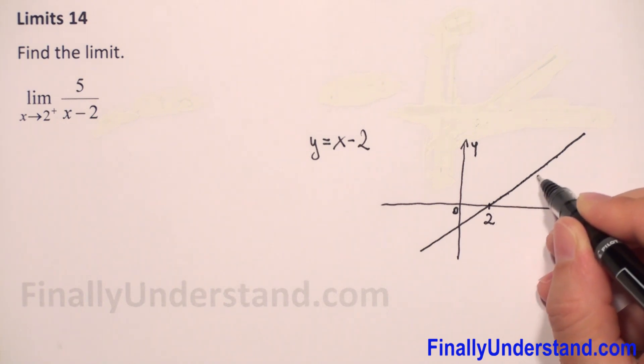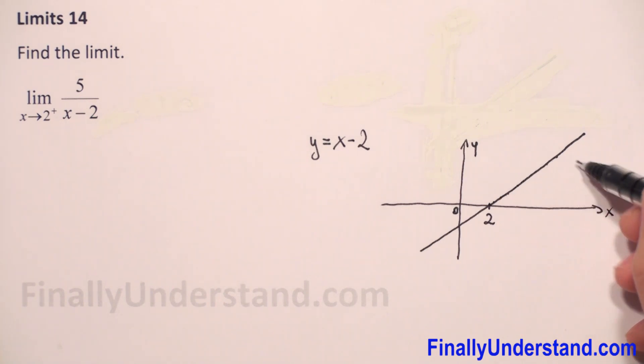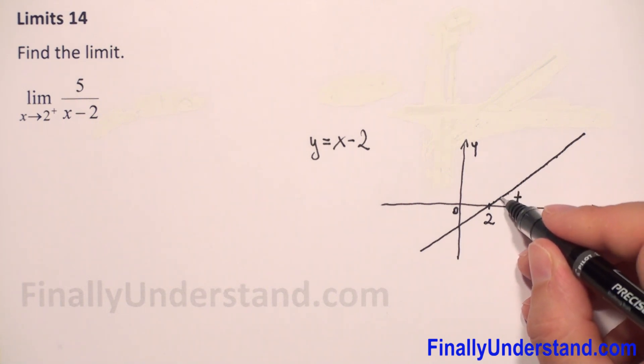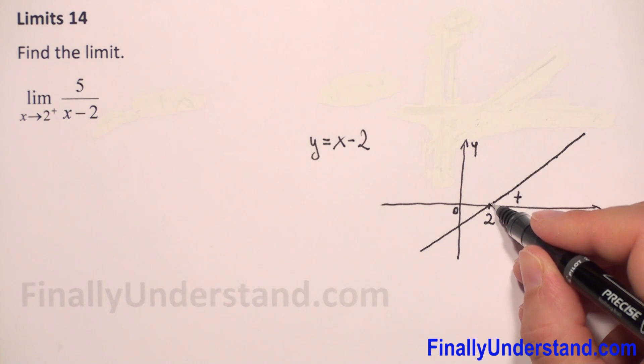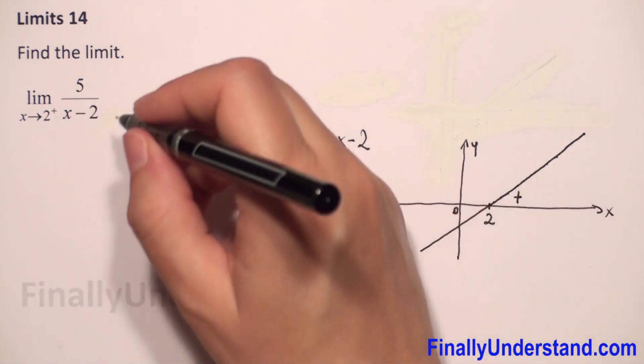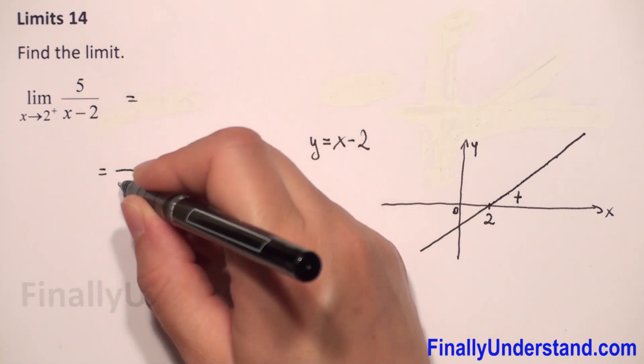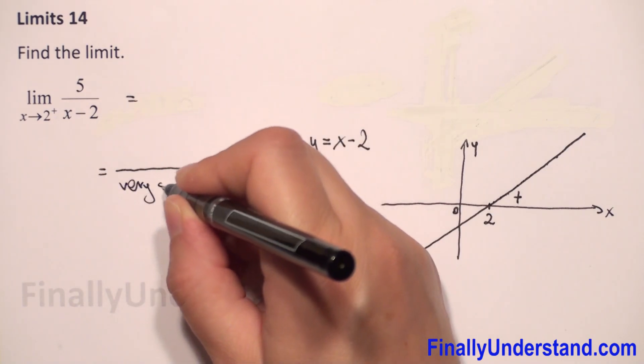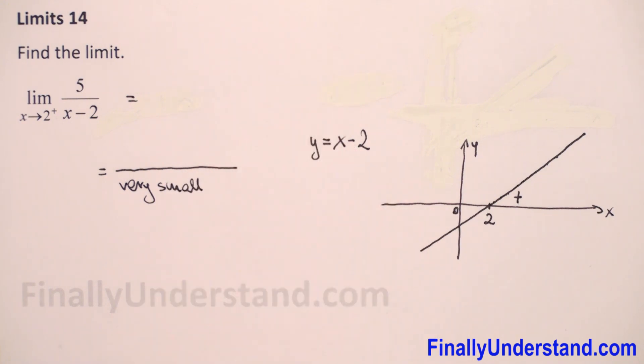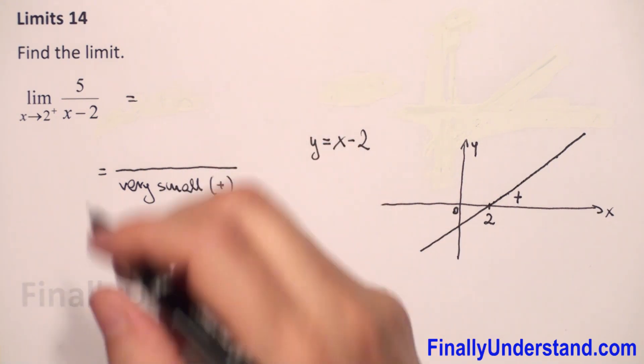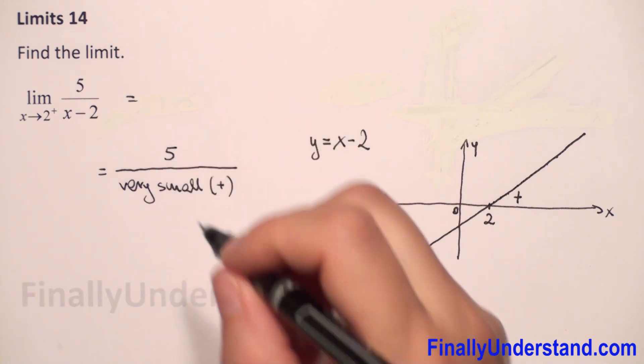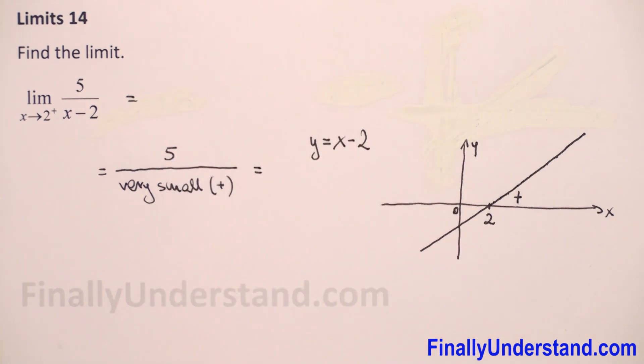So we have a very small positive number when we are close to 2. So in the denominator we can write we have a very small positive number, and the numerator stays the same, a positive number.